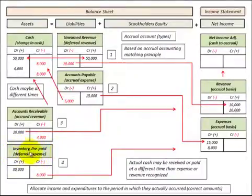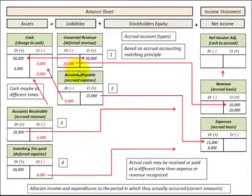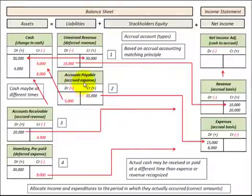We also have a fifth class, which would be for our depreciation or amortization type accounts. We use these accrual based accounts to allocate our income and expenditures to the period in which they actually occurred. Then we transfer them over to our income statement, recognizing them as revenues or expenses.